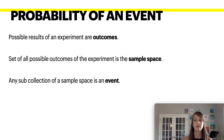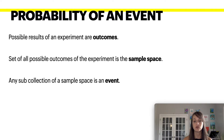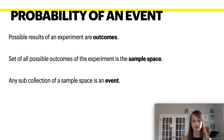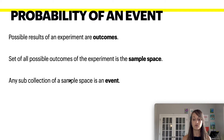For example, if you wanted to roll a die, you're looking for all the possible results of that experiment — the outcomes. A die has six numbers, so the possible outcomes are one, two, three, four, five, or six. Any sub-collection of that sample space would be an event. For example, what's the probability of rolling a three? That is a sub-collection — you're looking for a specific event of rolling a three.